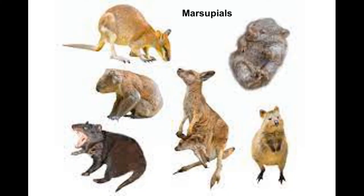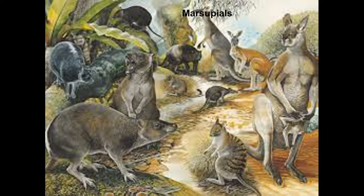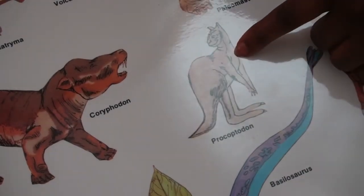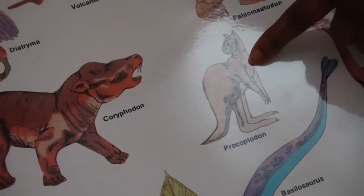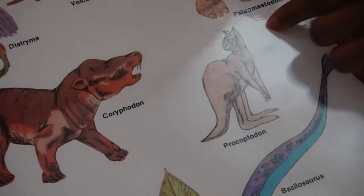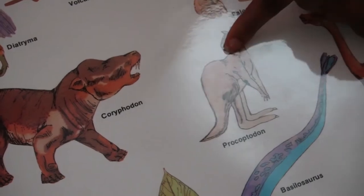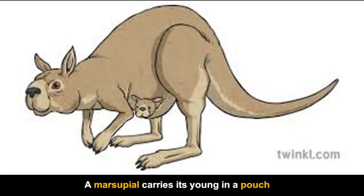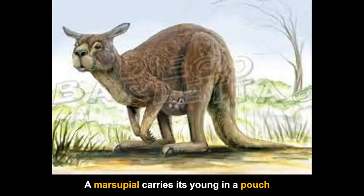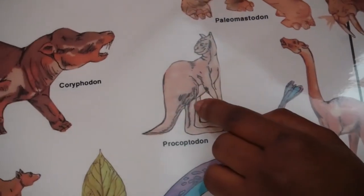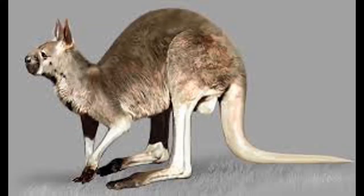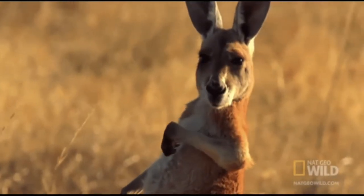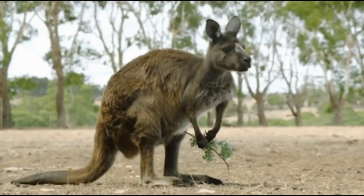Marsupials were much more prevalent in the Tertiary Period than they are today. Procoptodon was an enormous marsupial that lived in Australia towards the end of this period. It had a cat-like face and carried its young ones in a pouch — a marsupial being an animal that carries its young in a pouch. A primitive kangaroo, Procoptodon mostly lived like present-day kangaroos.